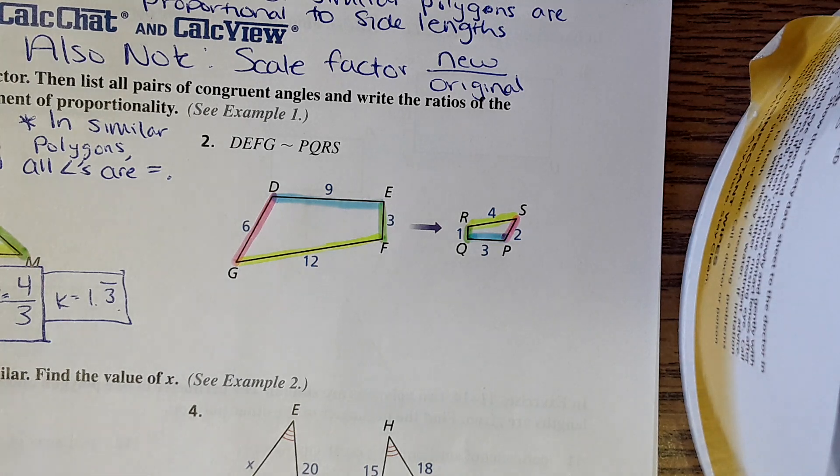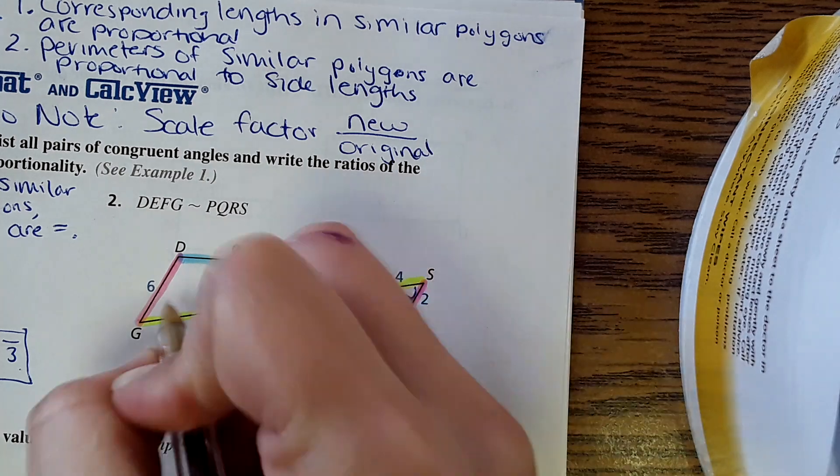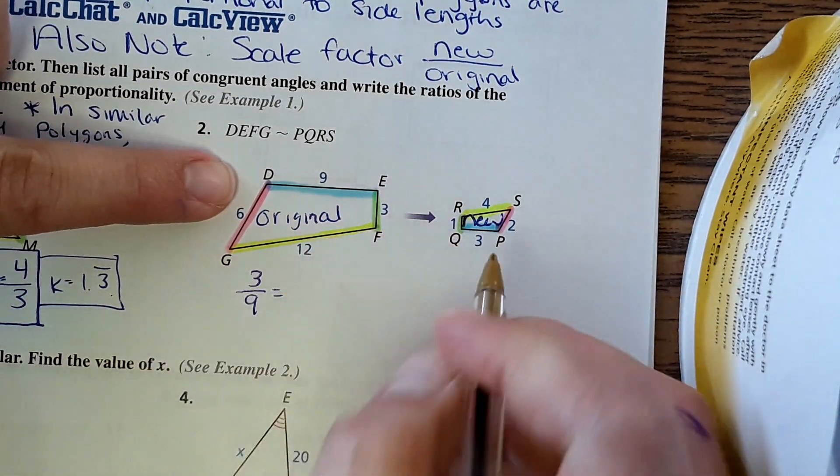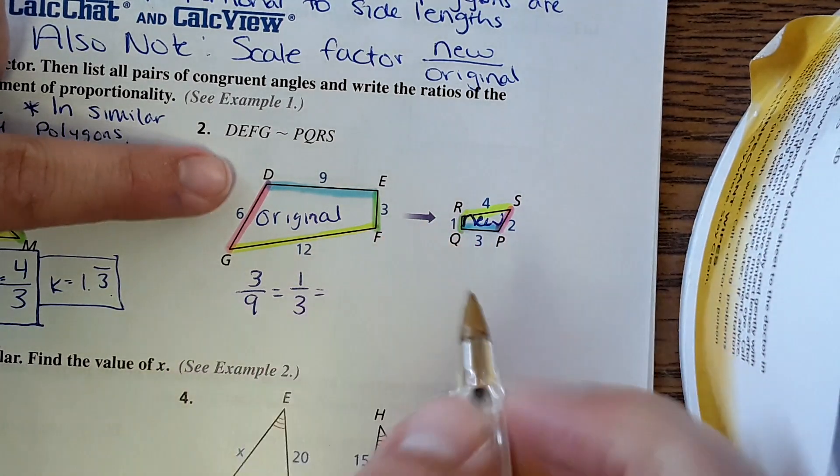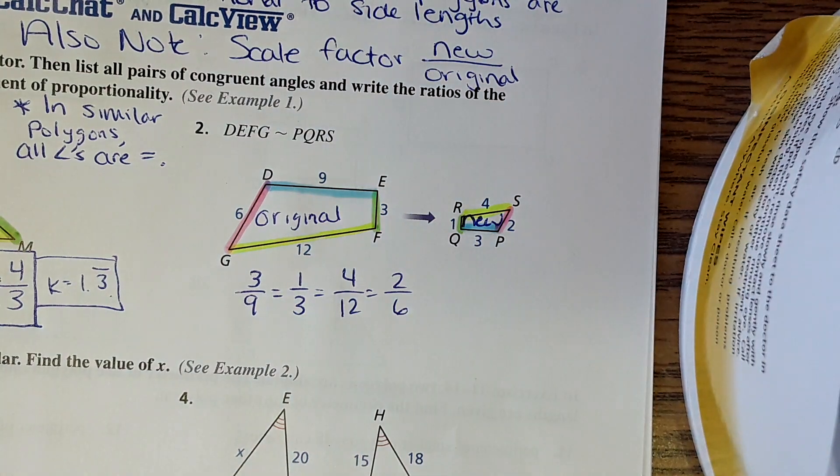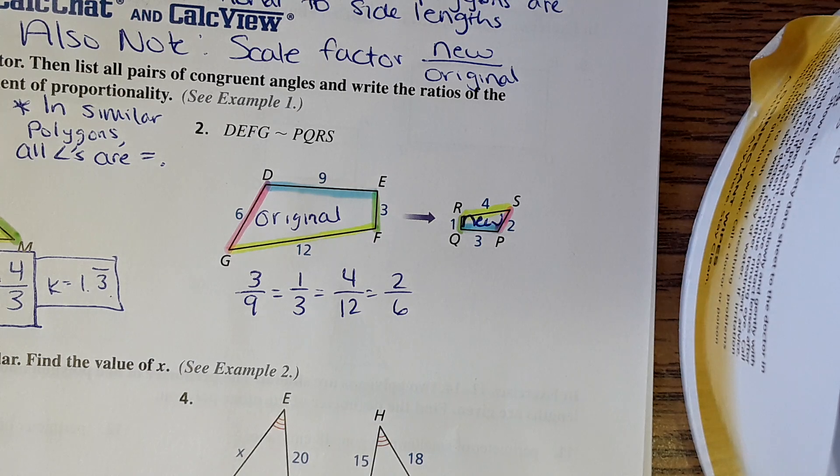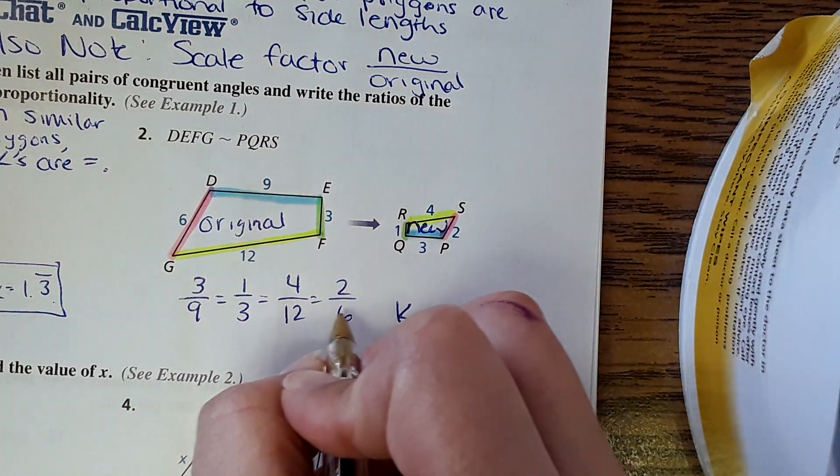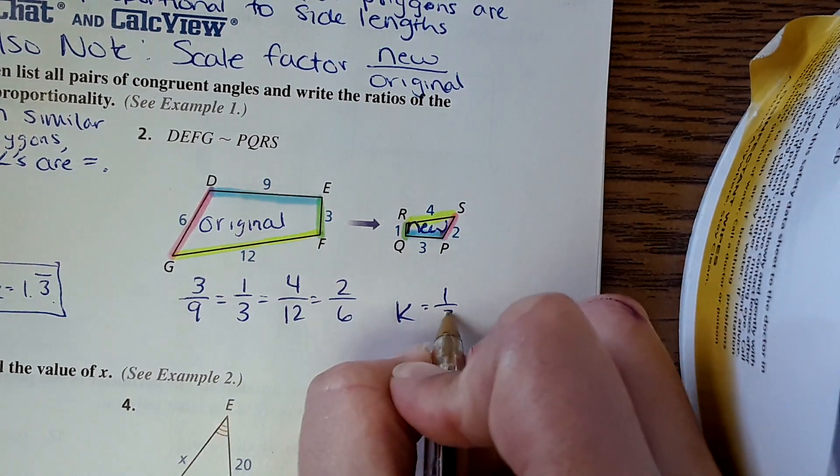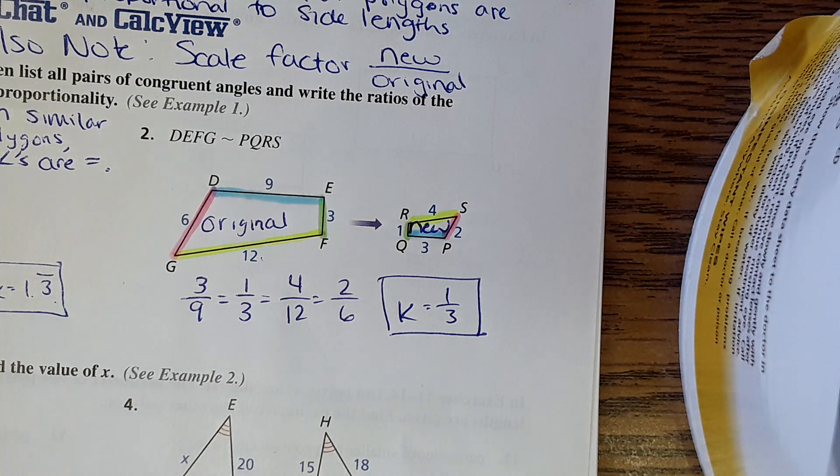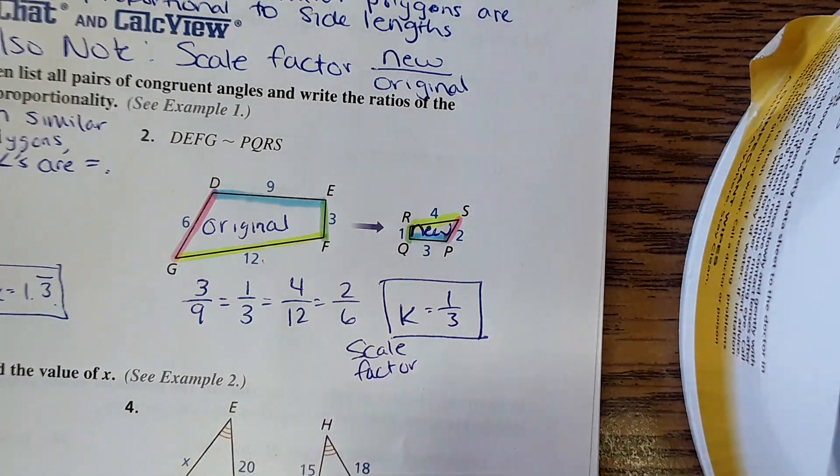Now that we identified our matches, we can set up our proportion. Remember, new over original. So this is our new, this is our original. I might do blue first: 3 over 9 equals 1 over 3, 4 over 12, and 2 over 6. All of these simplify to one third. They're definitely all proportional, these are similar. The scale factor, if I was to take one of these and simplify it, is one third. If I was to take any one of these side lengths, I can multiply it by one third and get the dimensions of the new shape.